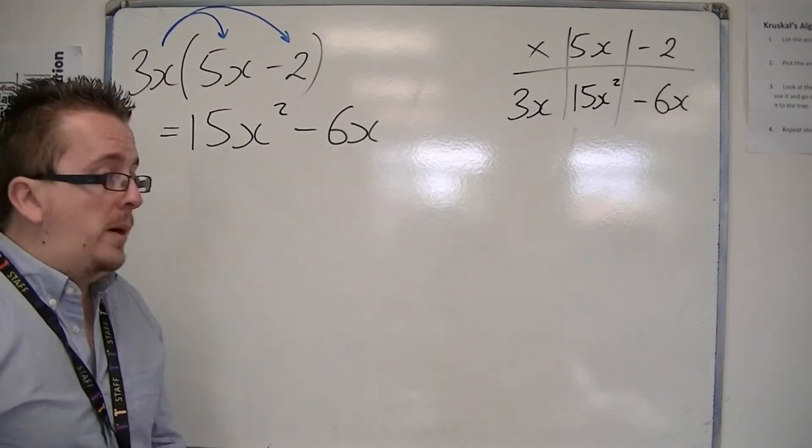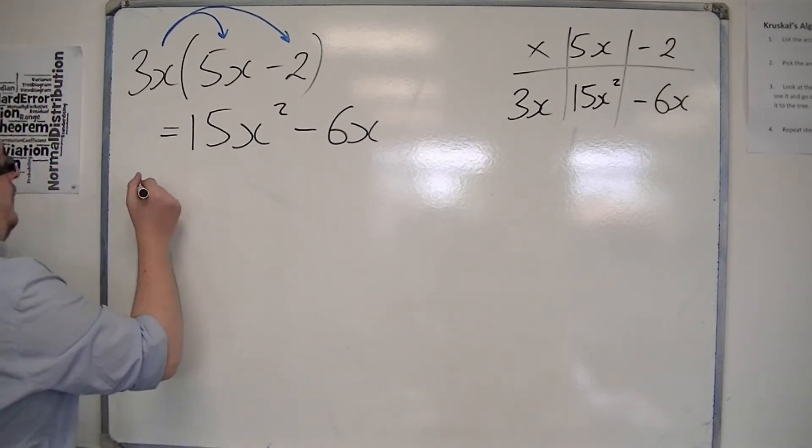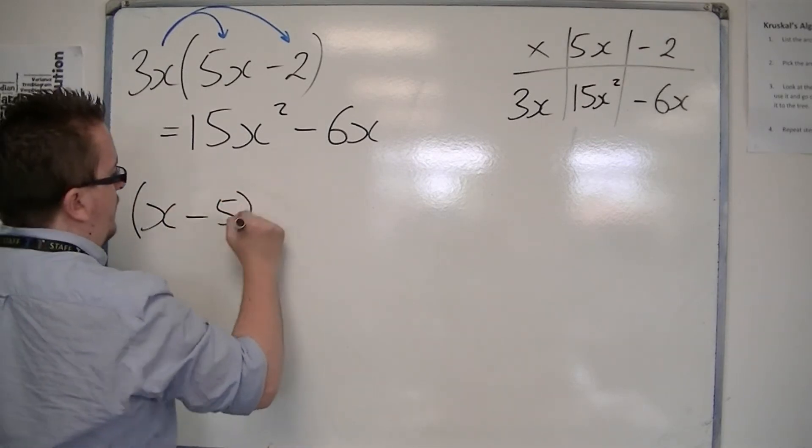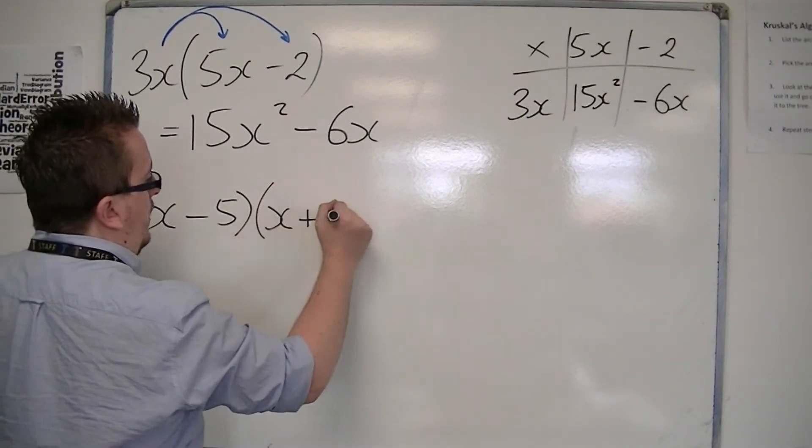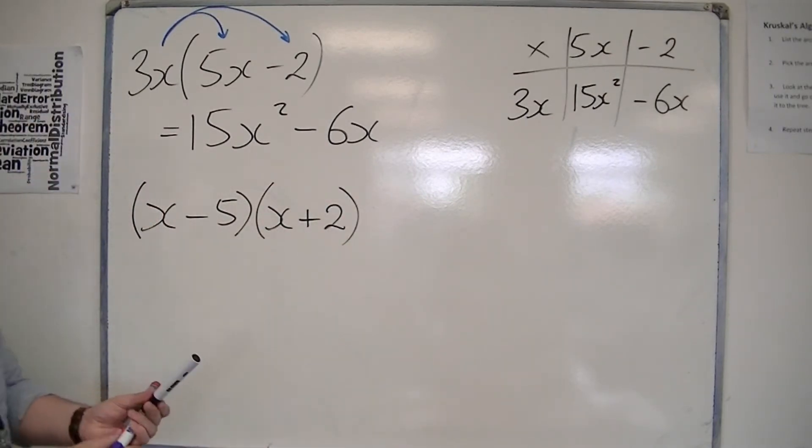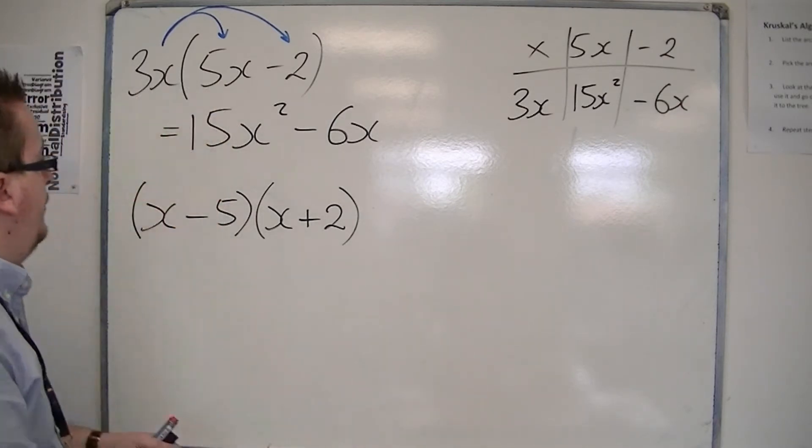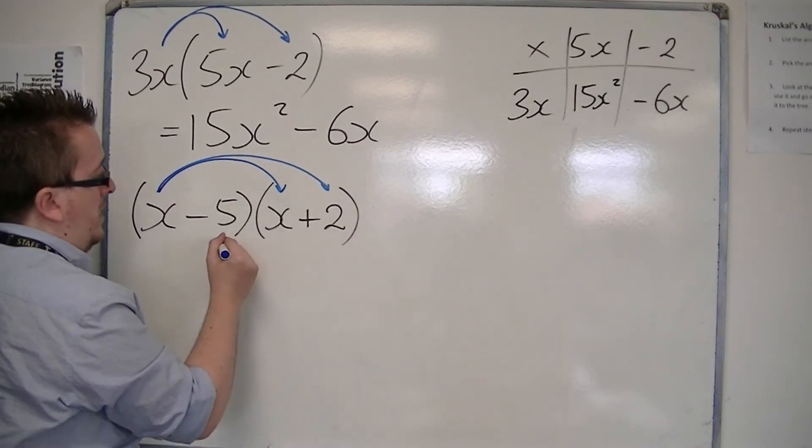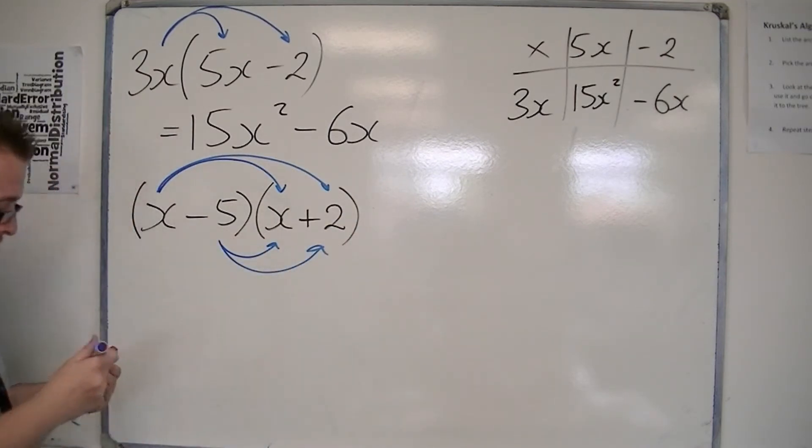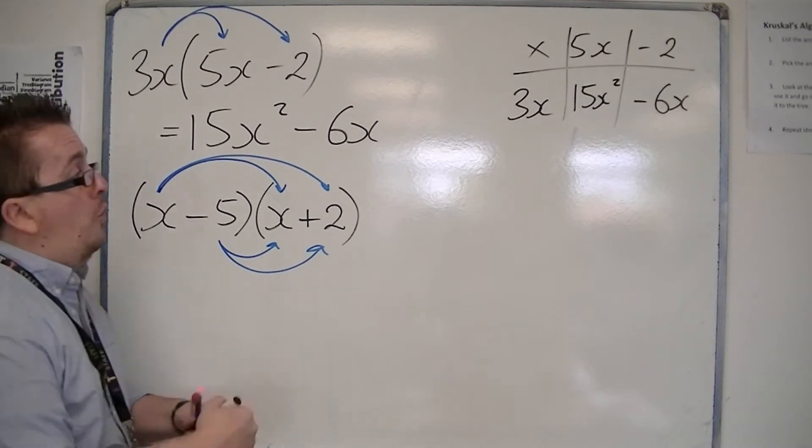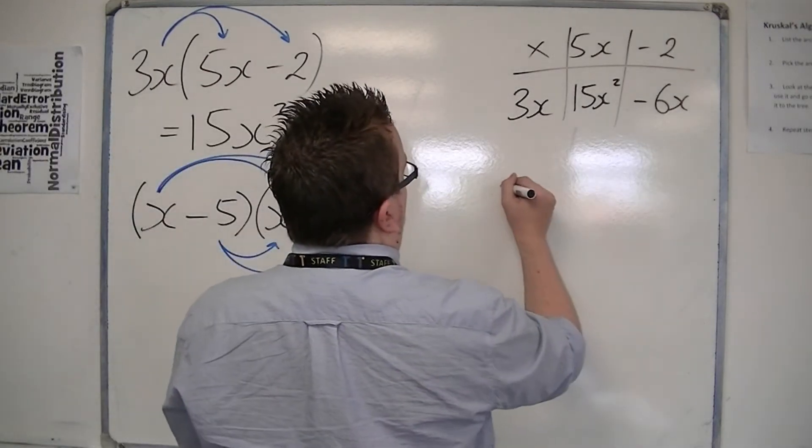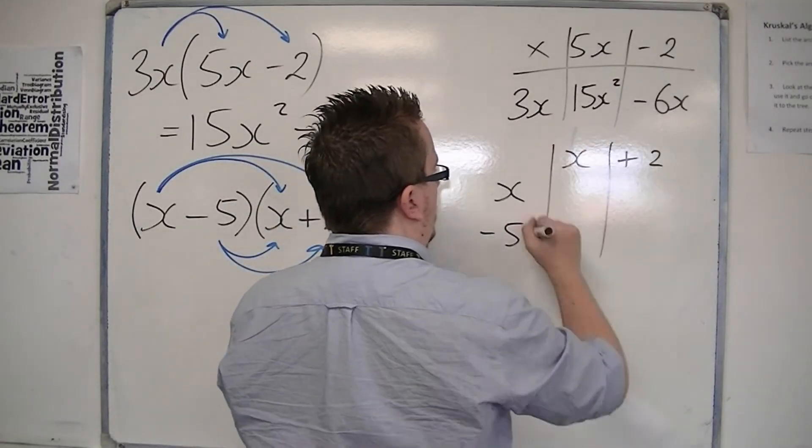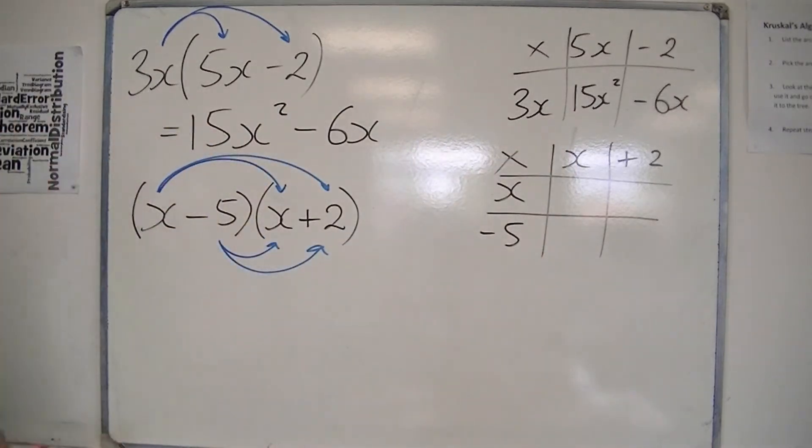In multiplying out double brackets, that's where some mistakes still get made. Let's have something like x take away 5 and x plus 2. In using arrows, you have x times the x, x times the plus 2, minus 5 times x, and minus 5 times 2. Or if you want to use the grid, you would have x minus 5 and x plus 2.